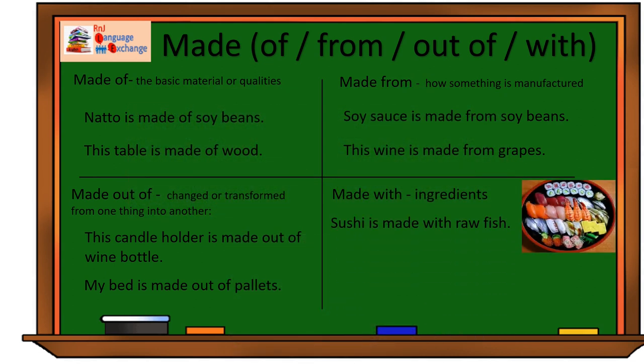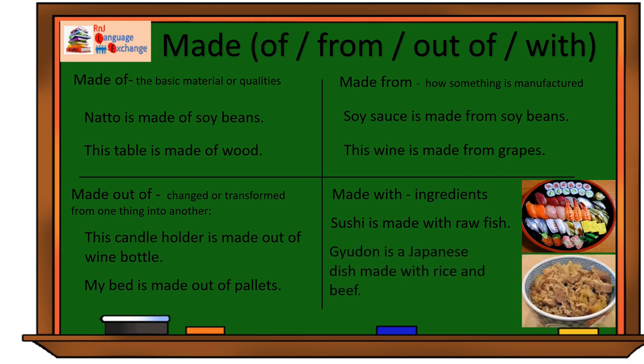Sushi, for example, is made with raw fish. It can also be made with ikora, or the so-called fish eggs, and other ingredients depending on the type of sushi. Our final example is this. Gyudong is a Japanese dish made with rice and beef.